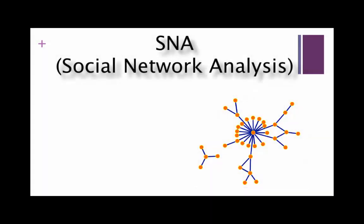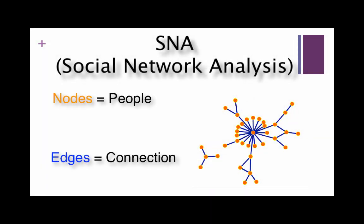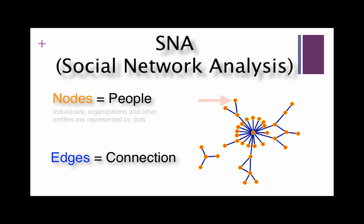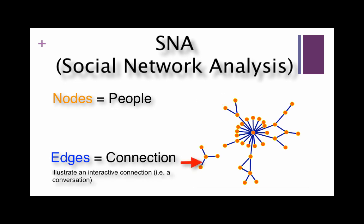There are two components to visualizing a network: nodes and edges. Nodes represent individuals, organizations, or other entities, and these are the dots in our diagram. Edges, which are the lines between the nodes, illustrate an interactive connection — for example, a conversation.